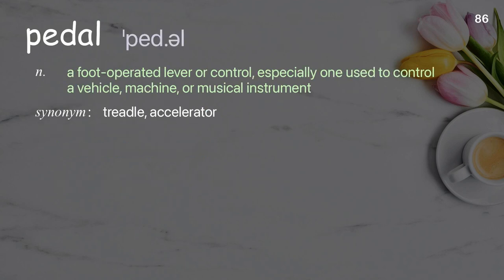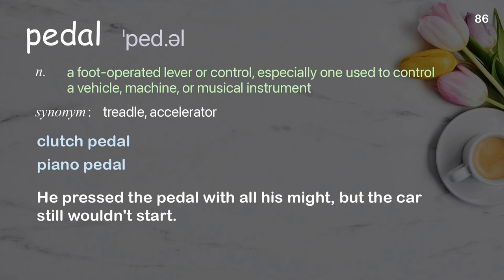Pedal: a foot-operated lever or control, especially one used to control a vehicle, machine, or musical instrument. Examples: clutch pedal; piano pedal. He pressed the pedal with all his might, but the car still wouldn't start.